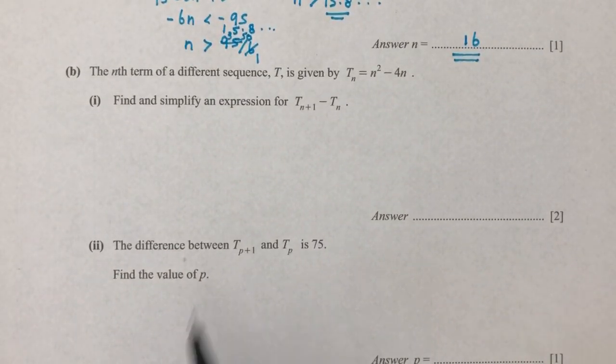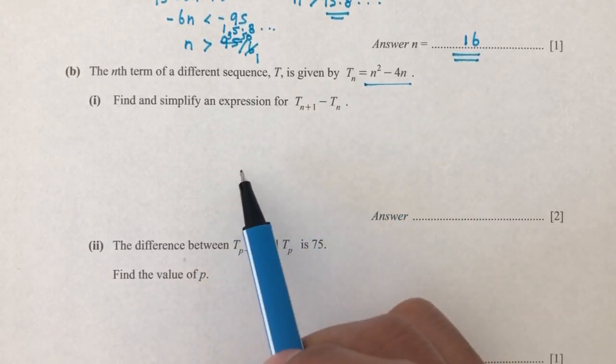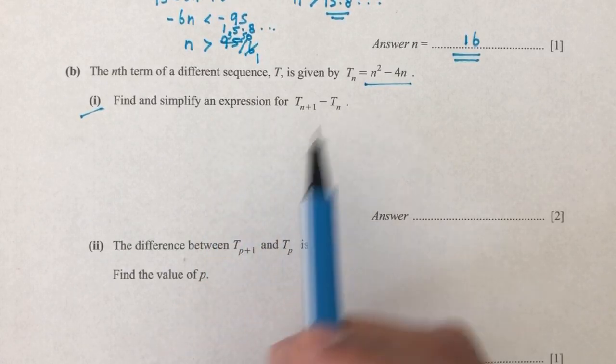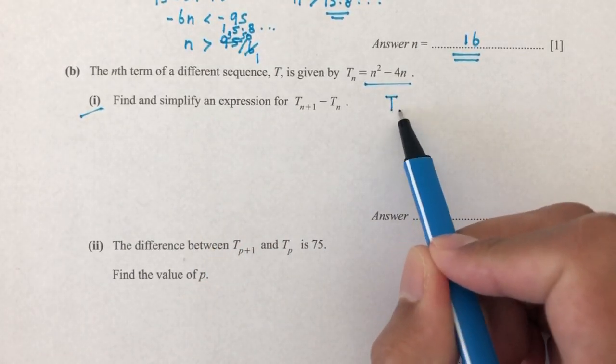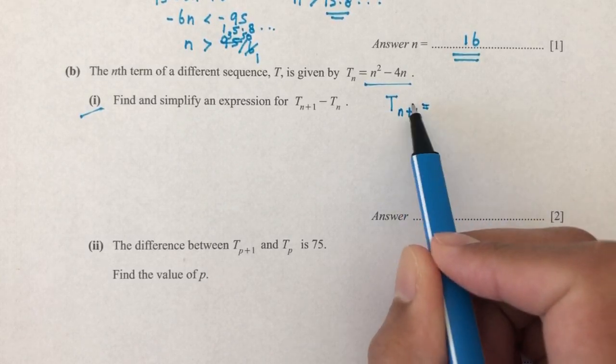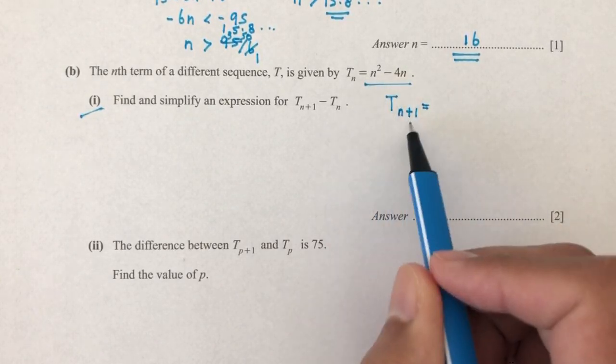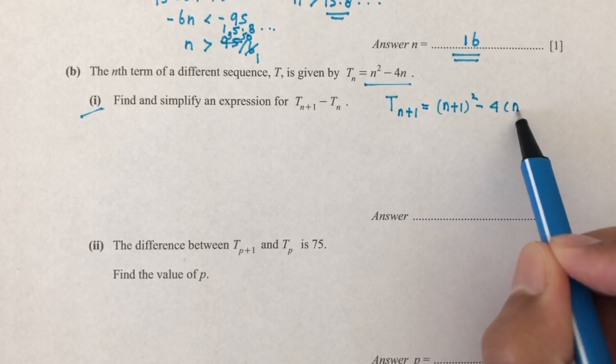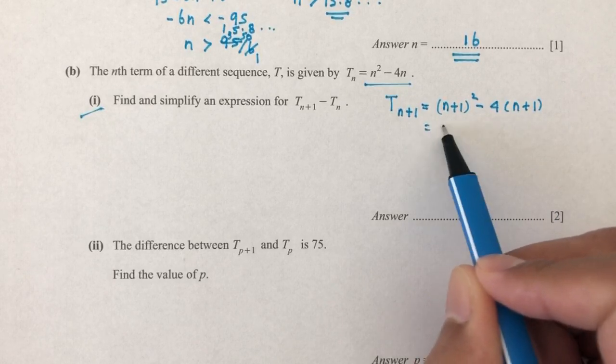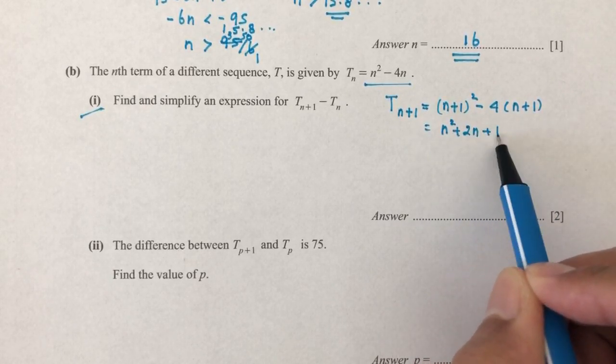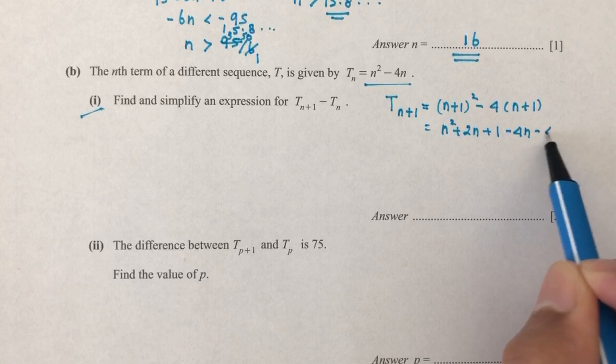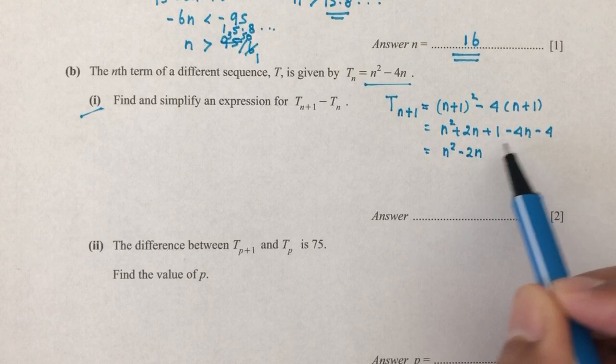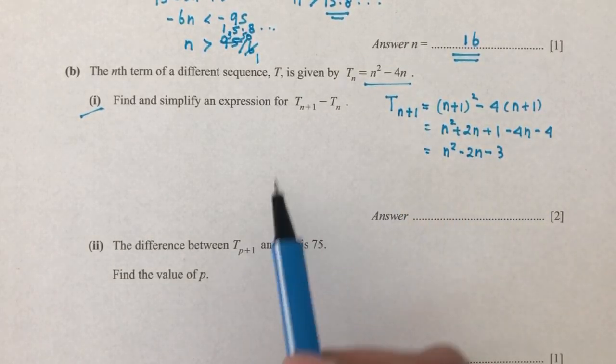The nth term of a different sequence T is given by T_n = n² - 4n. Part one: find and simplify an expression for T_{n+1} - T_n. So T_{n+1}, we have to replace the value of n by n+1. That will be (n+1)² - 4(n+1), which is n² + 2n + 1 - 4n - 4, which becomes n² - 2n - 3. So that is T_{n+1}.